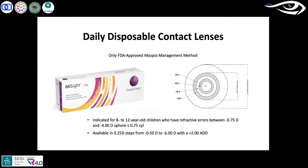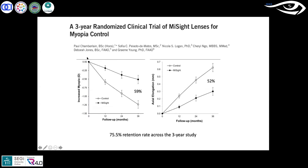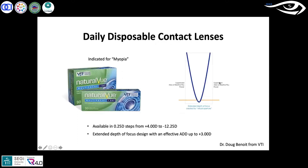We obtained the MySight contact lens around last July. It's a daily disposable and the only FDA-approved product in the United States specifically for slowing eye growth. MySight is indicated for children 8 to 12 years old, available up to minus 6 diopters, with a universal plus-2 add. The MySight clinical trial showed a 59% slowing in refractive error and 52% slowing in axial length over three years — roughly our goal of at least 50% slowing.